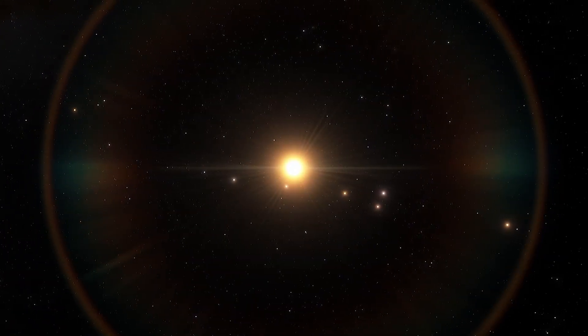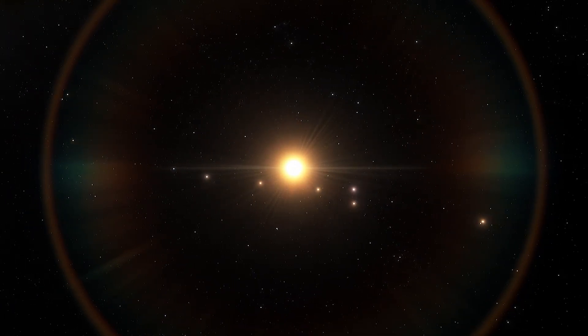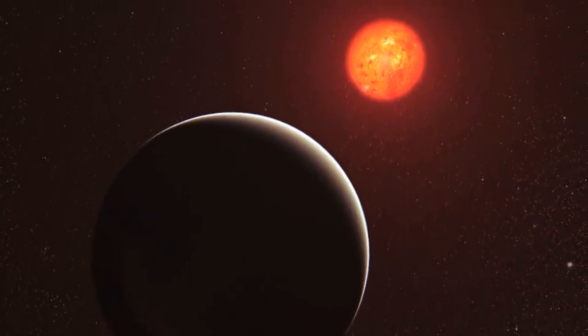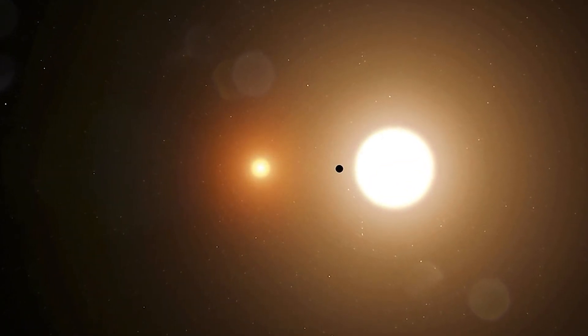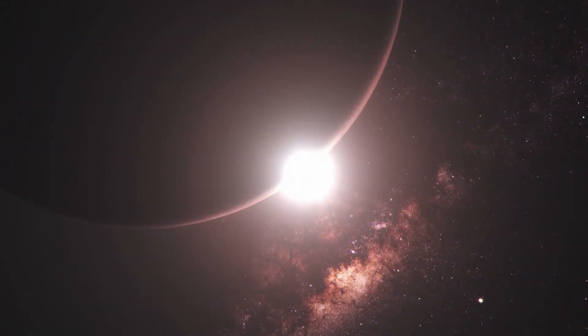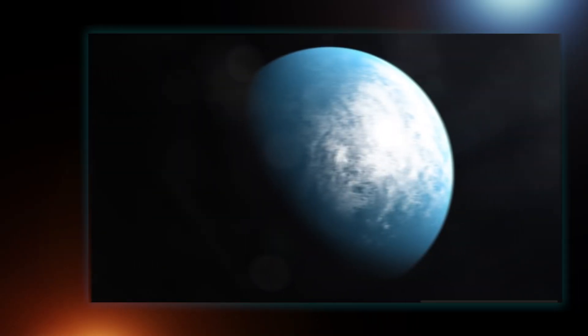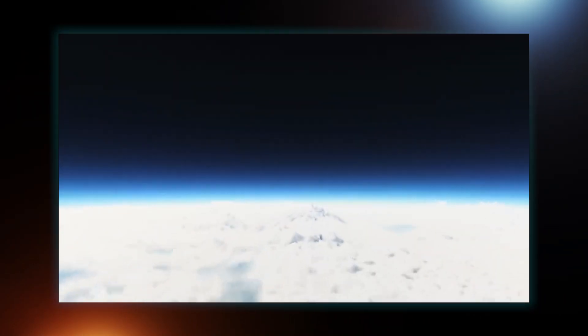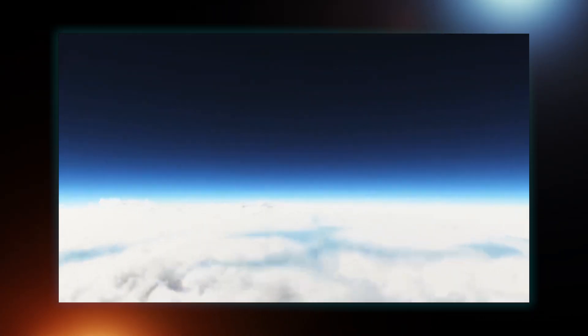When the researchers corrected the star's parameters, the sizes of its planets dropped, and they realized the outermost planet was about the size of Earth and in the habitable zone. Additionally, in 11 months of research, scientists learned the star does not emit flares, which improves the chances of TOI 700D being habitable and makes it easier to model its atmospheric and surface conditions.